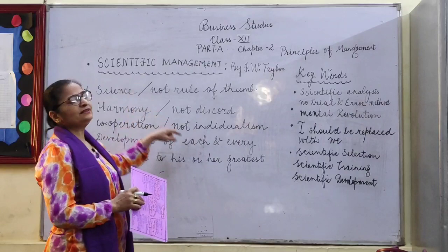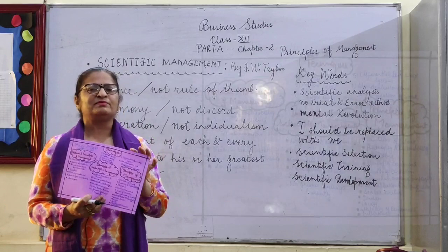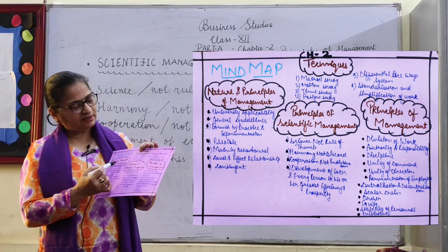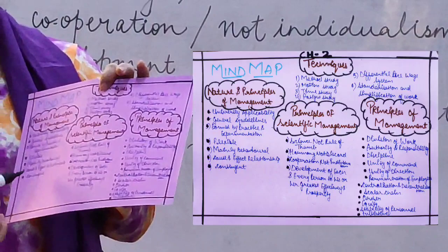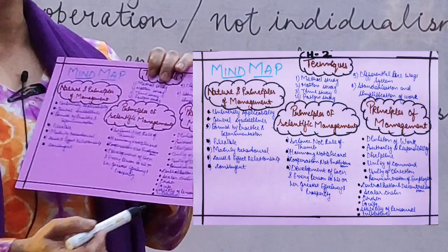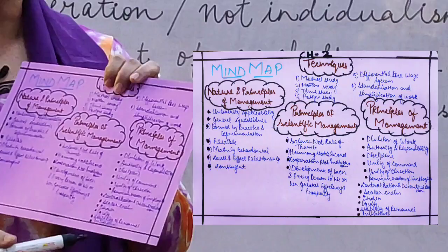Before starting this concept, we would like to just recall the previous content with the help of this mind map. This chapter — Principles of Management — covers its meaning, features, and nature, which we have already discussed. Then the principles of management by Henry Fayol. Henry Fayol introduced 14 principles, and we have discussed these in the previous lectures.